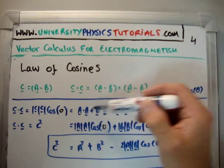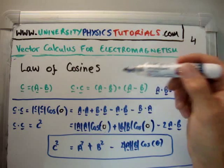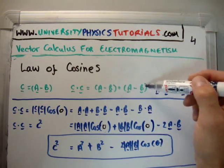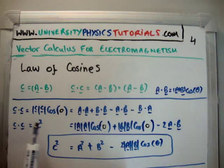We're going to get minus A dot B, minus B dot A, and plus B dot B. So C dot C turns out to be C squared, or the magnitude of C squared.